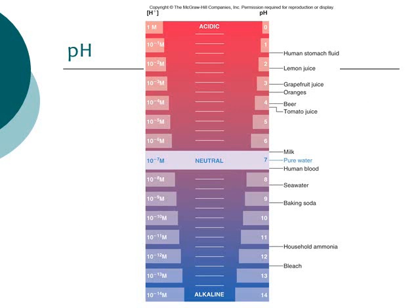We measure acidity and alkalinity based on the pH scale, which goes from zero to 14. Pure water is set at seven — the neutral point. Anything less than seven is considered an acid; for example, human stomach fluid has a pH around 1.5 to 2, and lemon juice is about 2. Beer is around 4 — a little acidic. Anything with a pH greater than seven is alkaline or a base; human blood is at 7.4, slightly alkaline. Seawater, baking soda, and bleach are all alkaline chemicals.